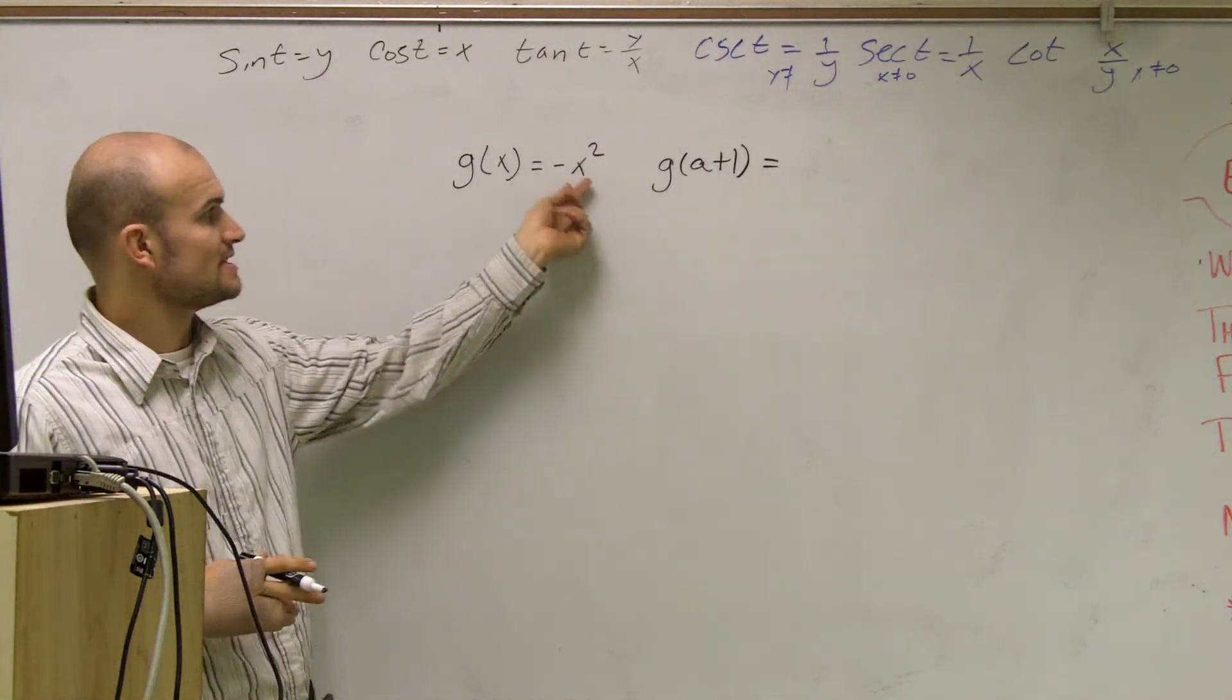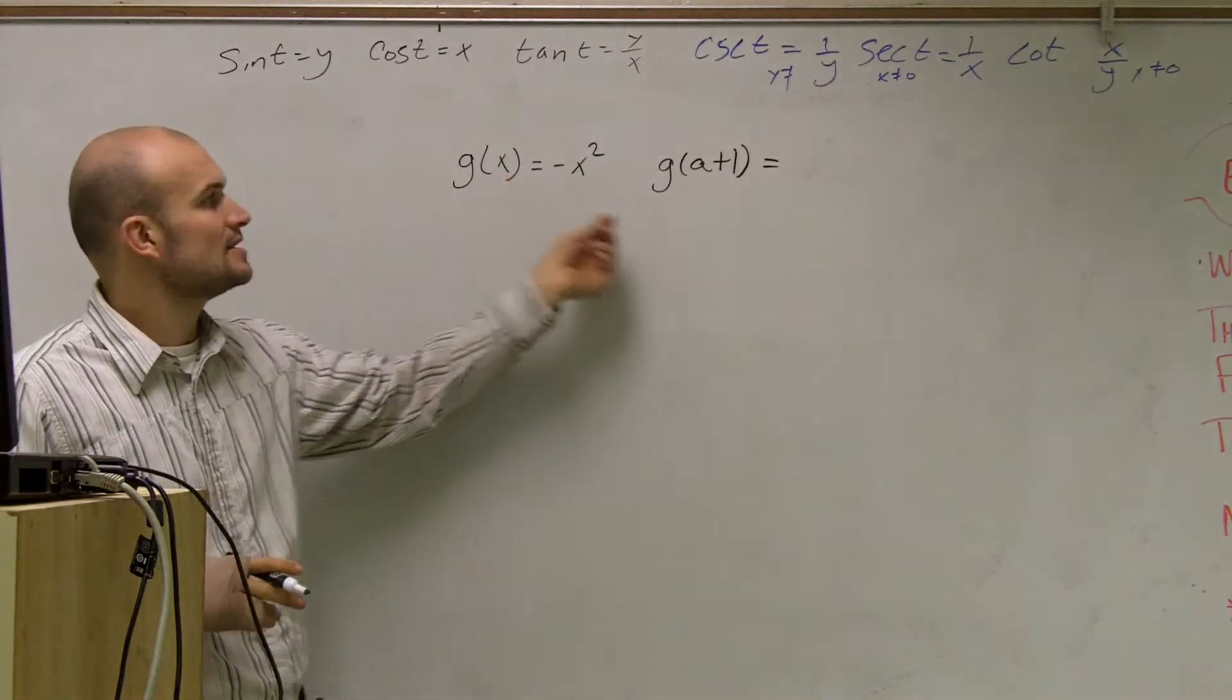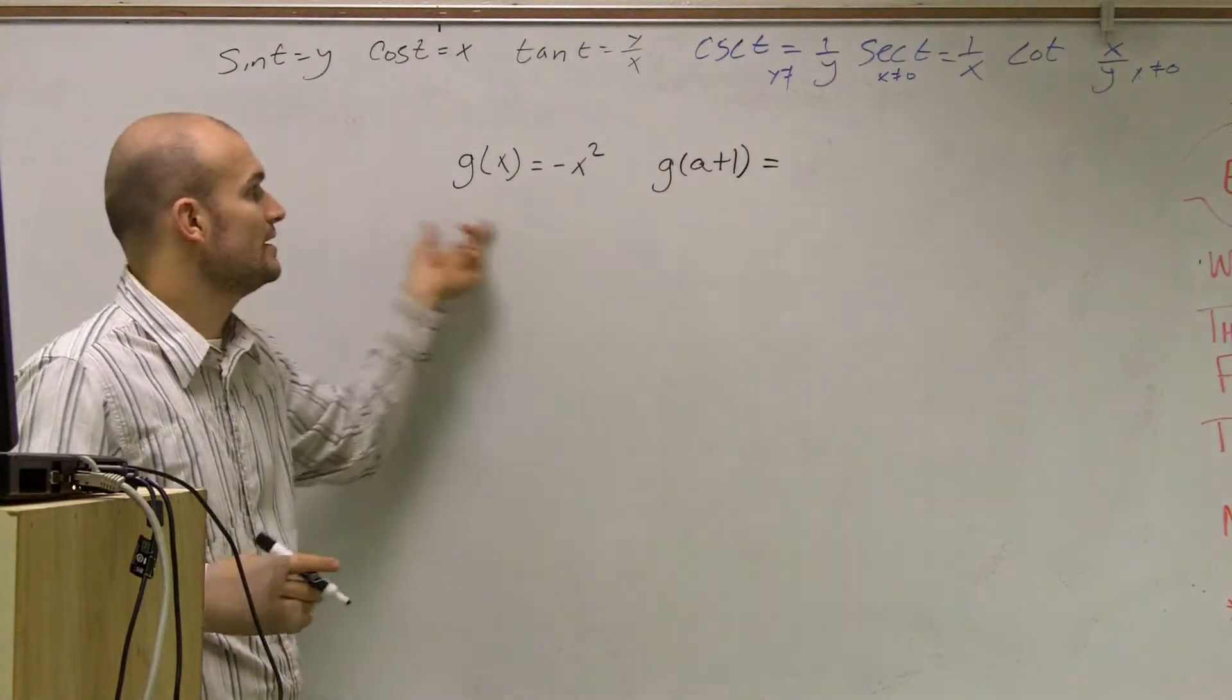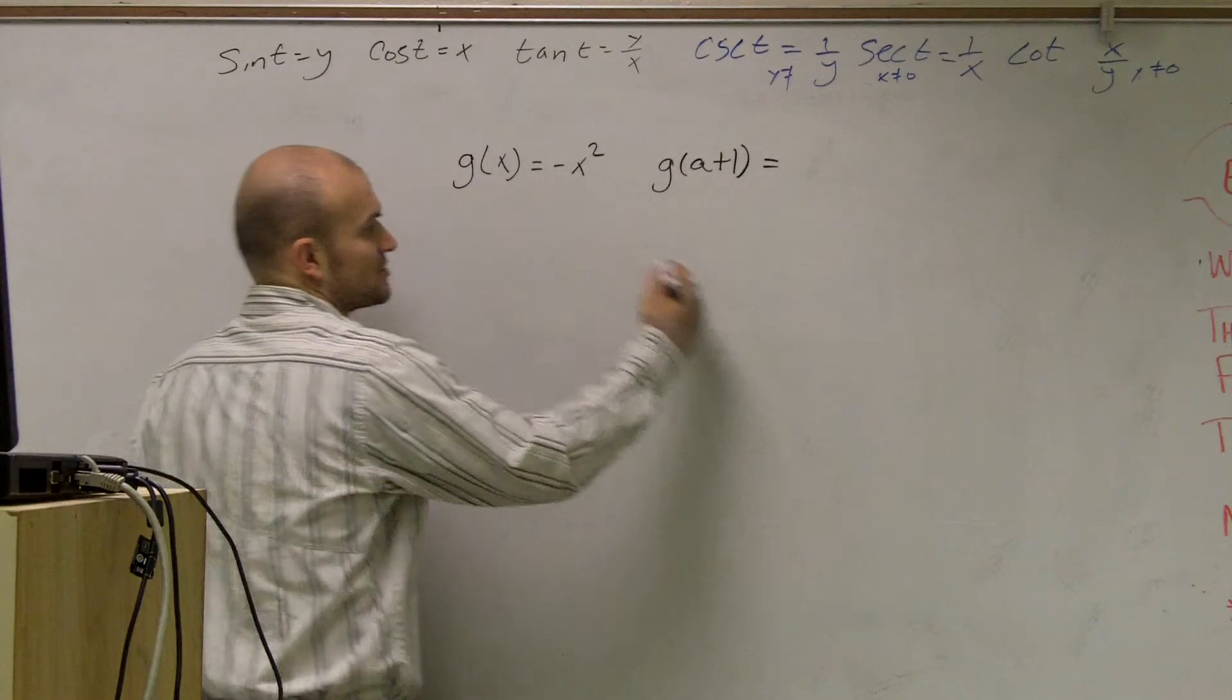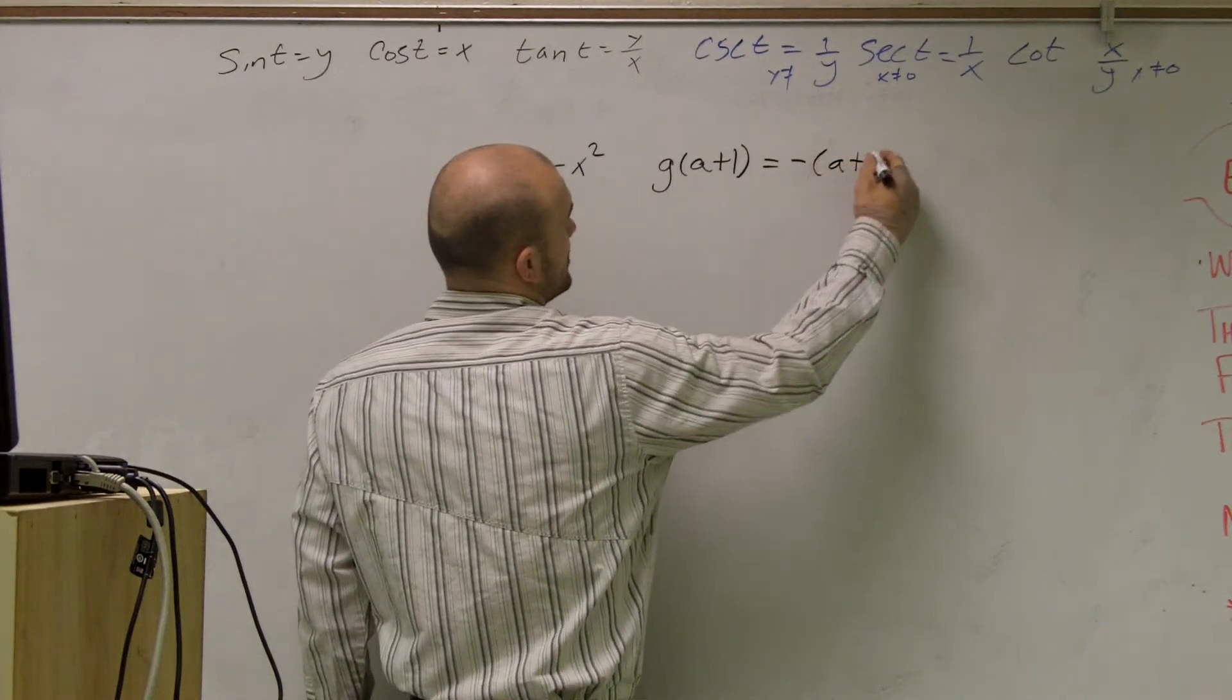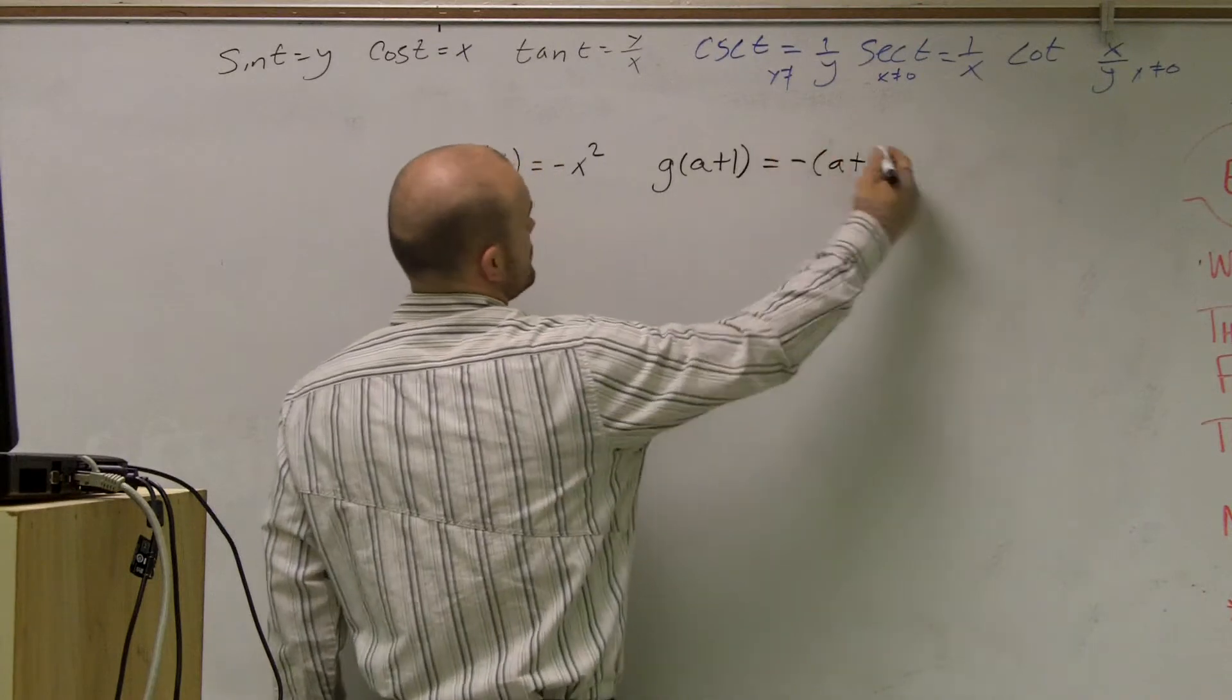This represents the value of my function at x. So to find the value of the function at a+1, I'm going to plug in a+1 into my function, which is -x². So I have -(a+1)².